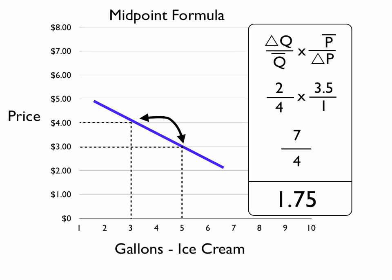Or, in this case, we would have 1.75. That, once again, would be the average elasticity through that range. That's the midpoint formula.